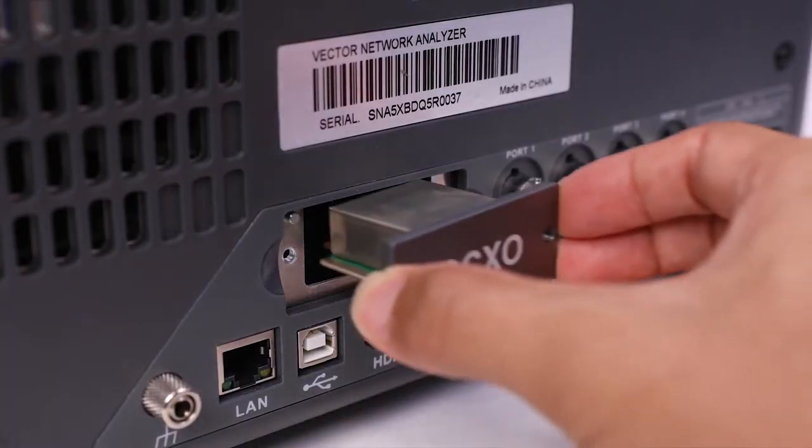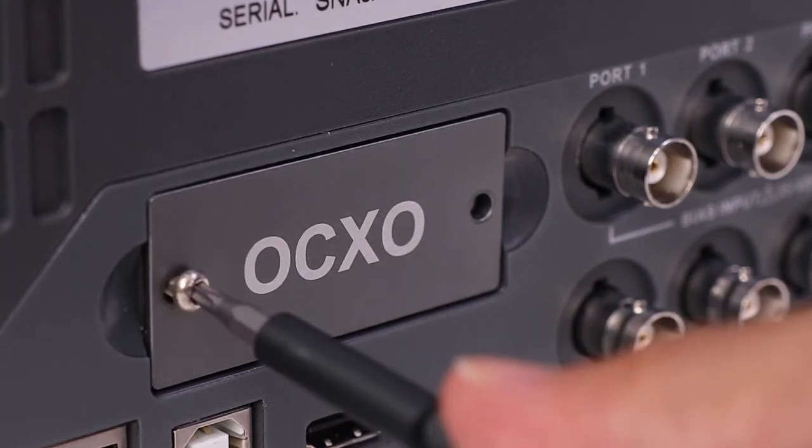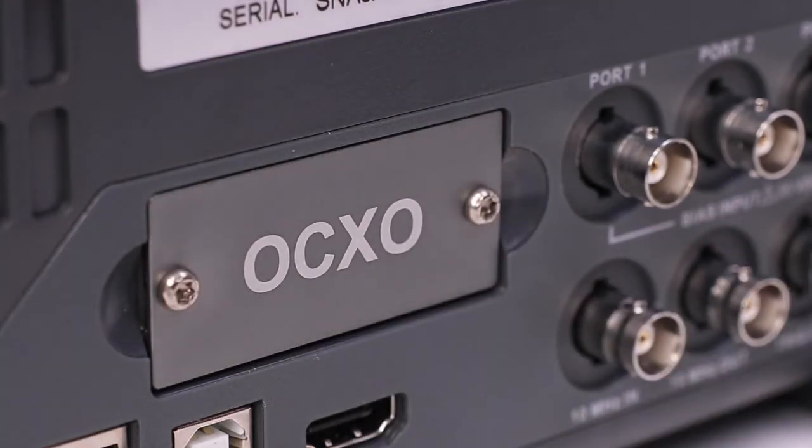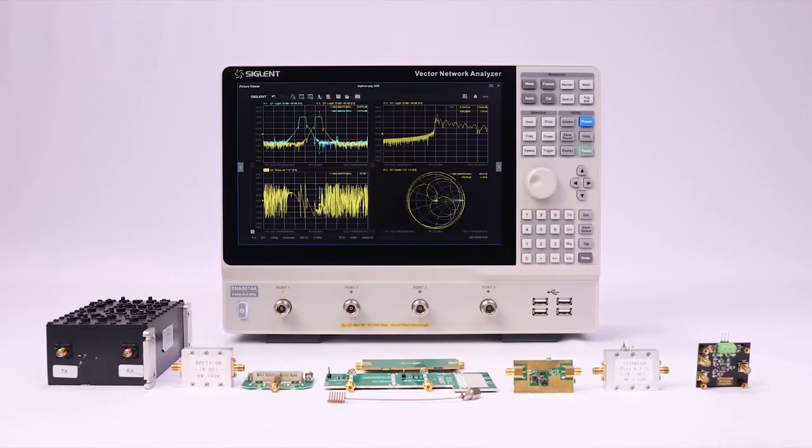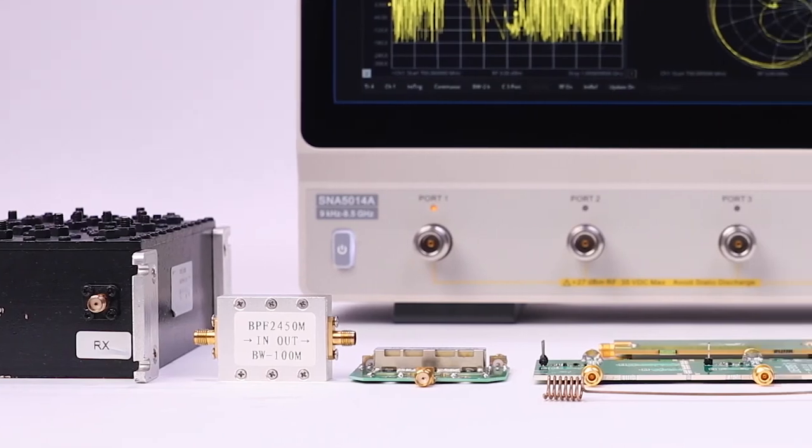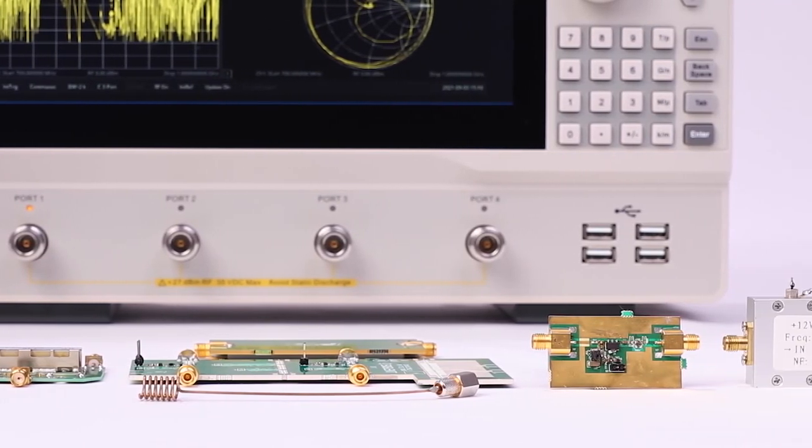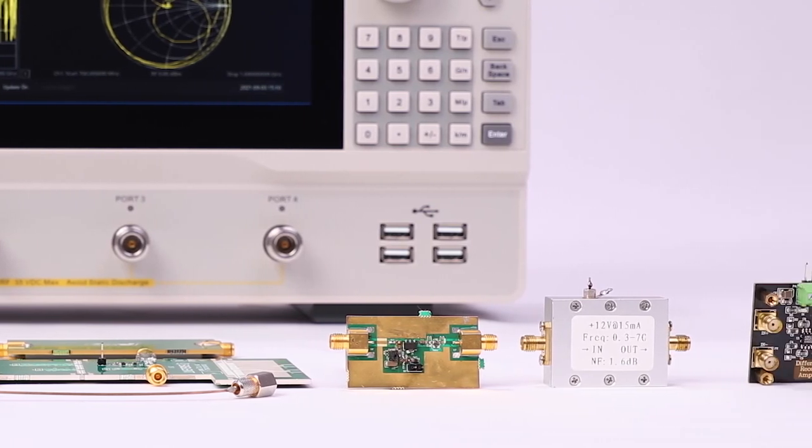The Siglent SNA 5000A vector network analyzer delivers a wide complement of RF measurements including S parameters, balance tests, time domain analysis, TDR and eye diagrams, and many more.